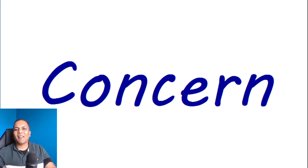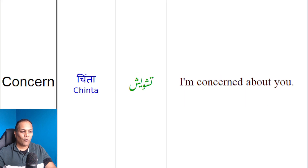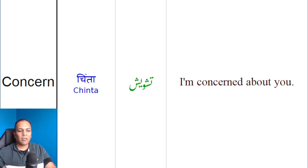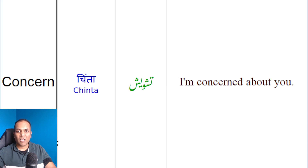Toh shurru kertein apna aaj ka iFactner ka learning video tutorial. Doostoon, word concern ka sb se common meaning hoota hai chinta ka, tashwish ka. Jisna aap kisi ke baaray mein concerned hain, toh aap kehenge: 'I'm concerned about you.' Yaan ke mujhay aap ke baaray mein chinta hai, mein aap ke baaray mein tashwish rakhta hoon. I'm concerned about you.